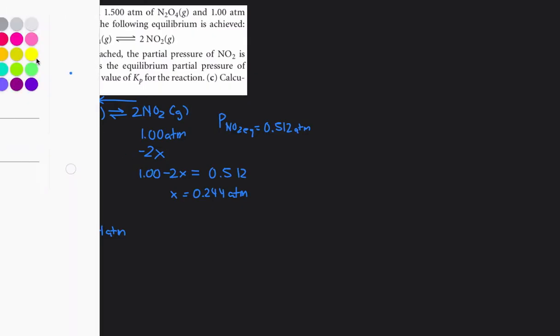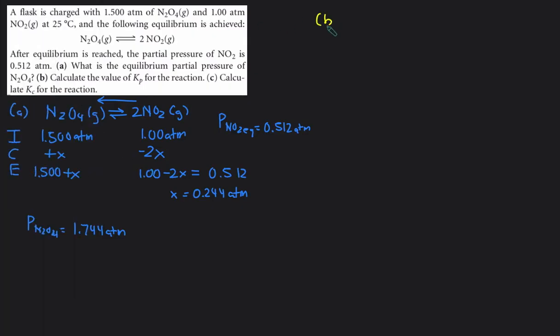Next, for part b we are asked to solve for the Kp, the value for Kp of the reaction. So we can start by writing out the Kp expression. Kp is just going to be the pressure of the products NO2 squared because of the coefficient, divided by the pressure of the reactants N2O4. Then we just need to plug in the equilibrium pressure in here to get the value of Kp, which we already know.